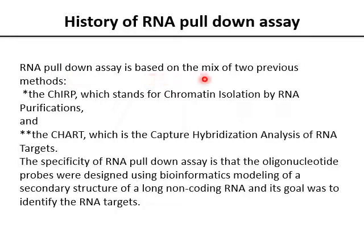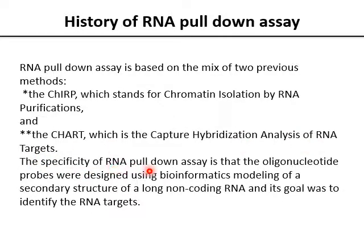A brief overview of the history of the RNA pulldown assay: it is based on a mix of two previous methods. The first is ChIRP, which stands for Chromatin Isolation by RNA Purification, and the second is CHART, which stands for Capture Hybridization Analysis of RNA Targets. The specificity of the RNA pulldown assay is that the oligonucleotide probes were designed using informatics modeling of the secondary structure of a long non-coding RNA, with the goal of identifying RNA targets.